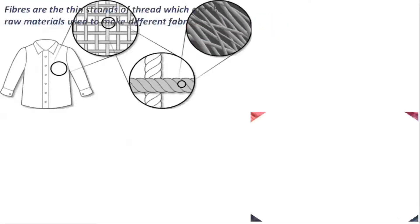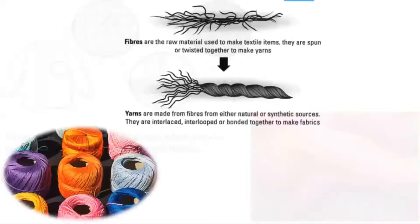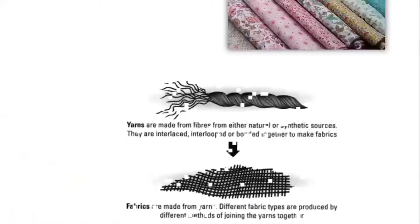So what does the word fiber mean? Fibers are thin strands of thread — thin, hair-like structures — which are the raw materials used to make different fabrics. How are fabrics or clothes obtained from fibers? Initially, fibers are twisted and spun together to make thick yarns. Then these yarns are interlooped and bound together using different methods to make different fabrics.